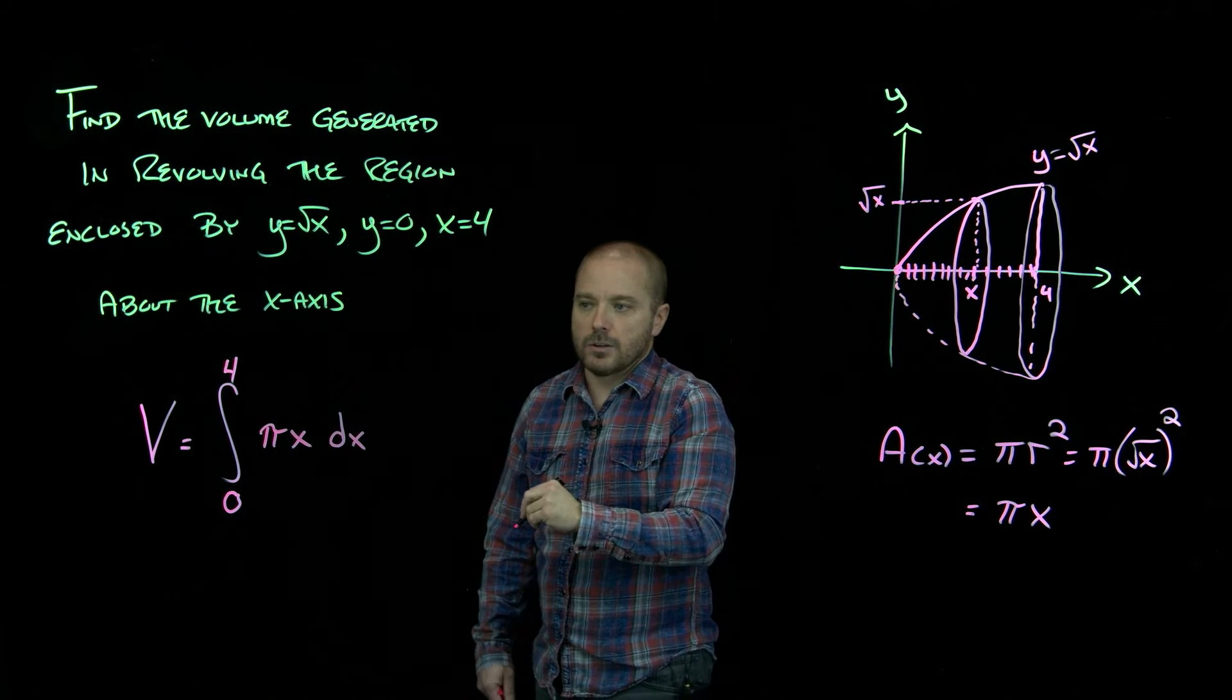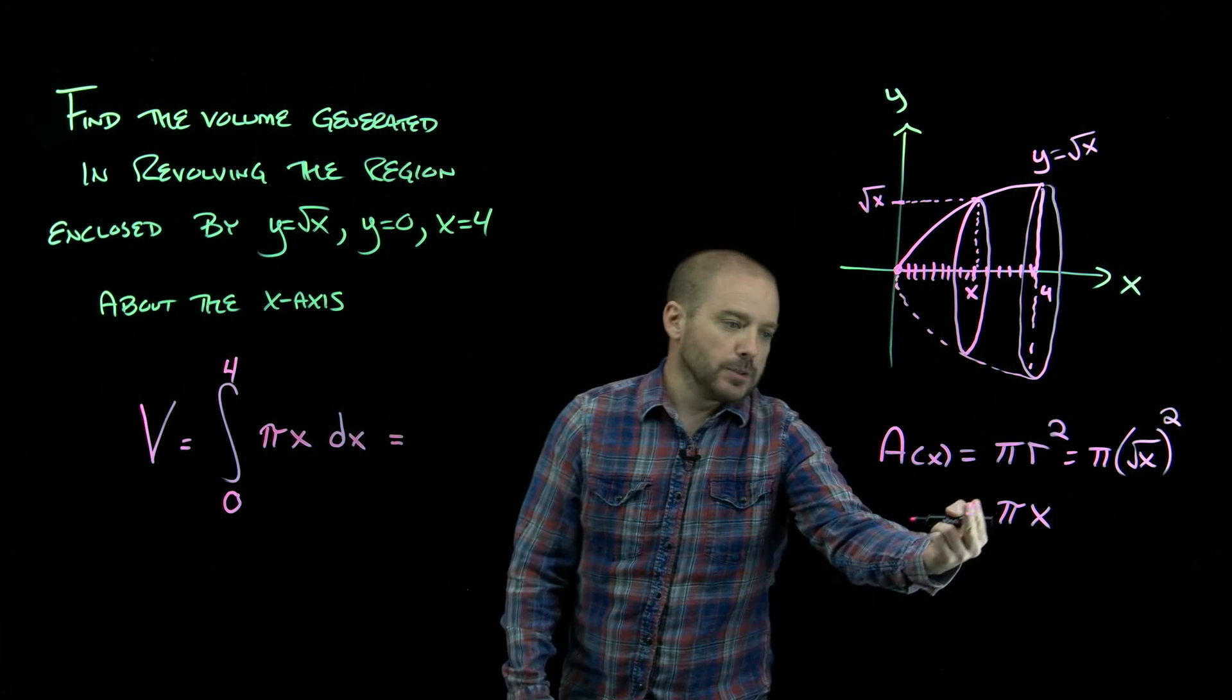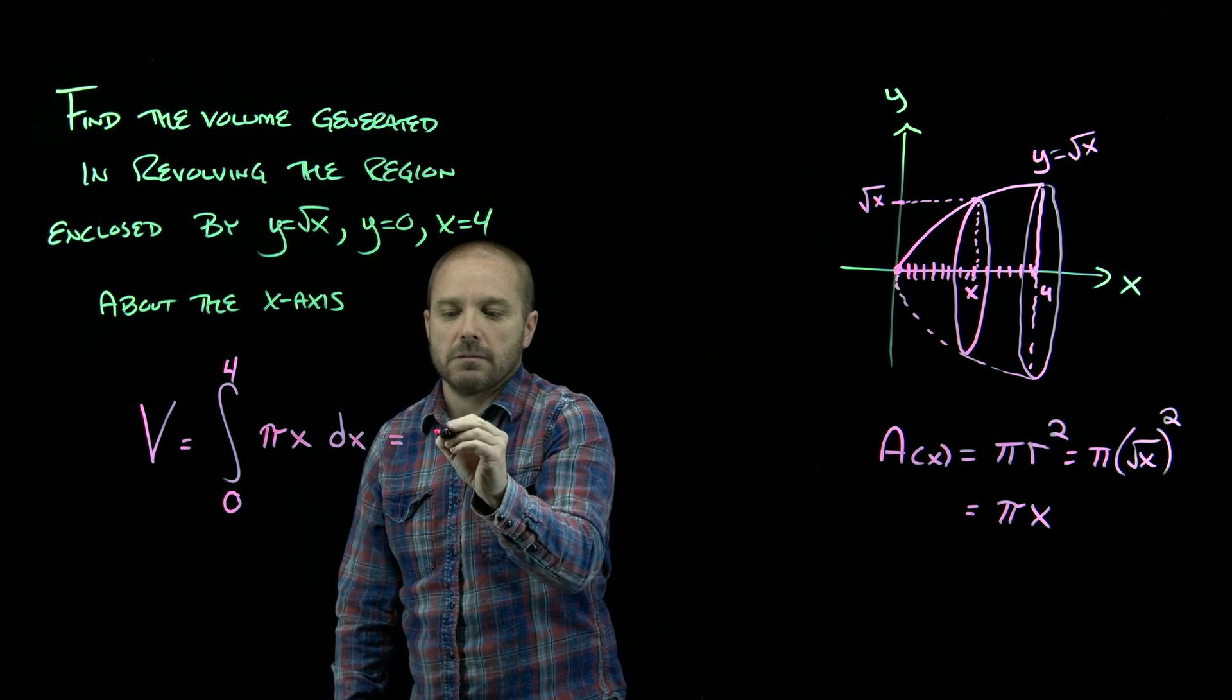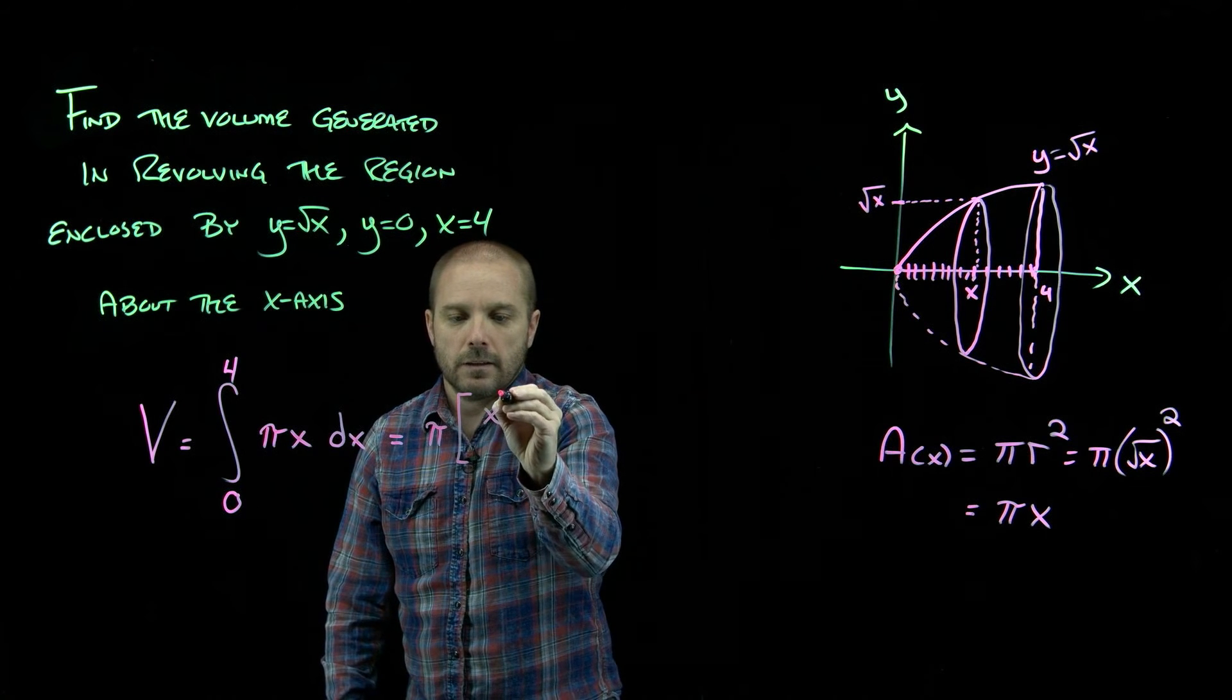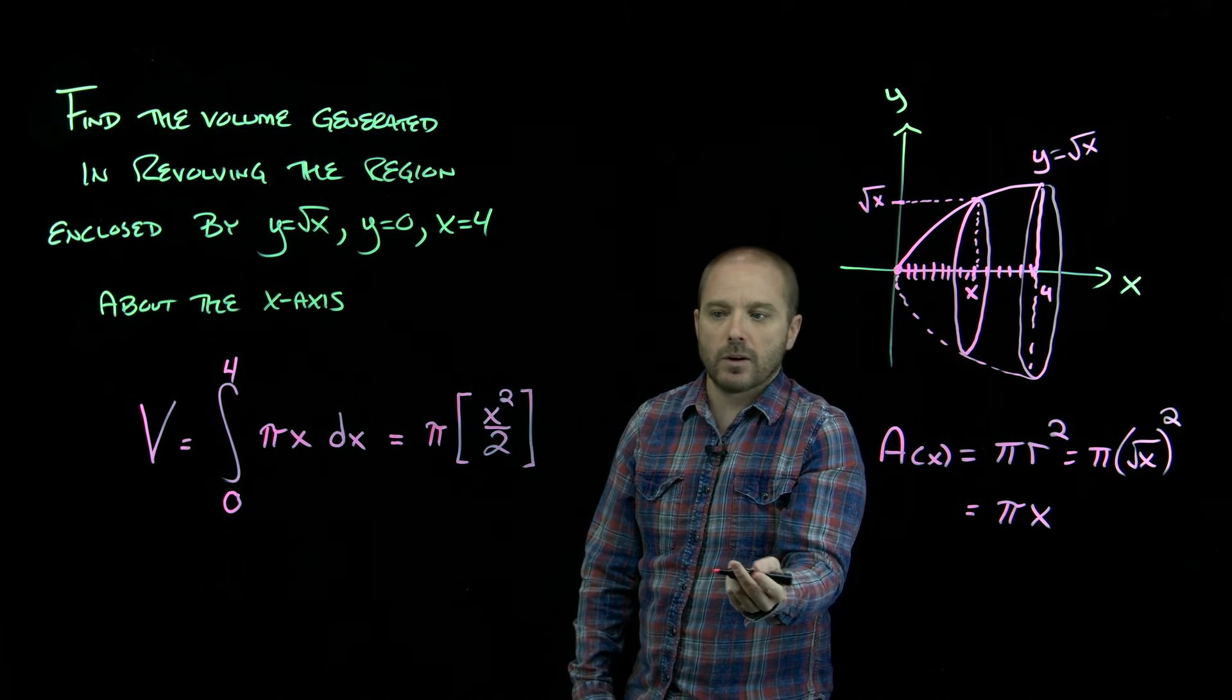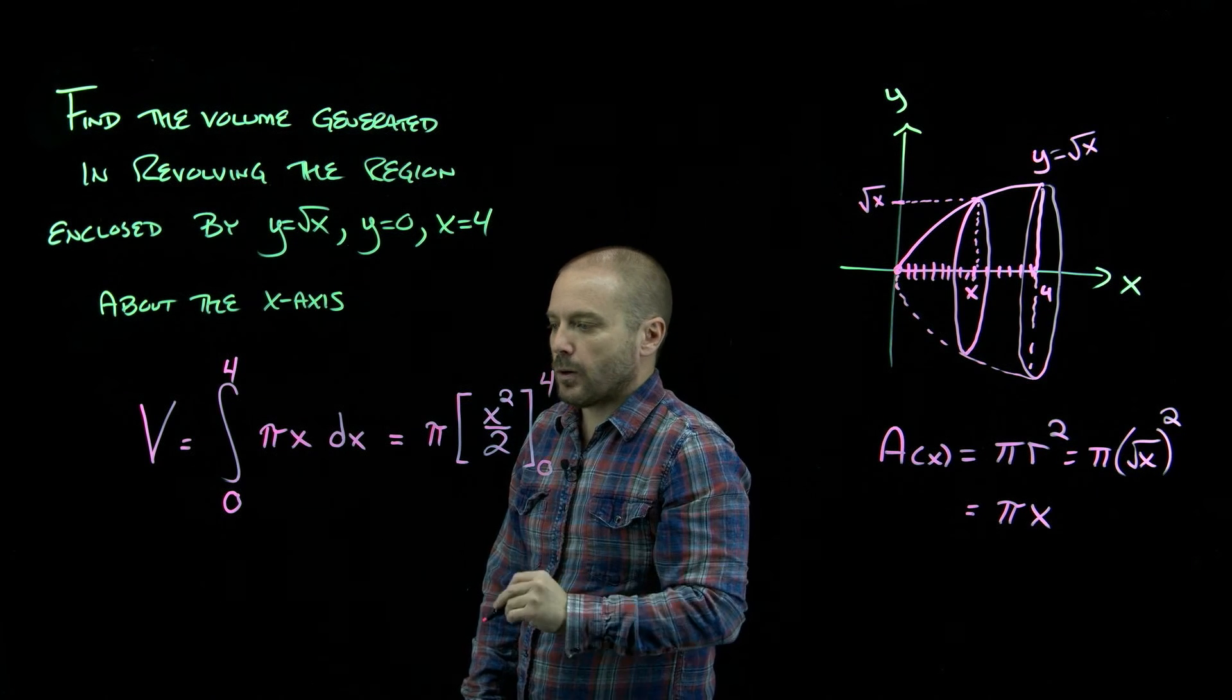So our integral. Now, because they're circles, every one of your integrals will have a pi in it, which is a constant. So typically I would just take the pi outside. Using the power rule. Antiderivative of x, x squared over 2. 0 to 4.